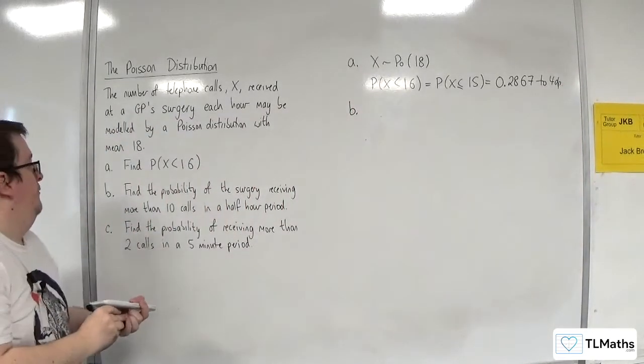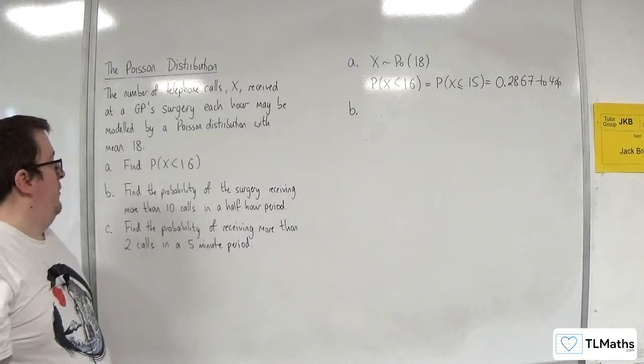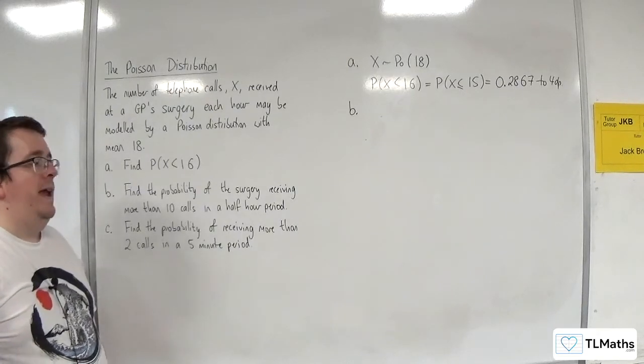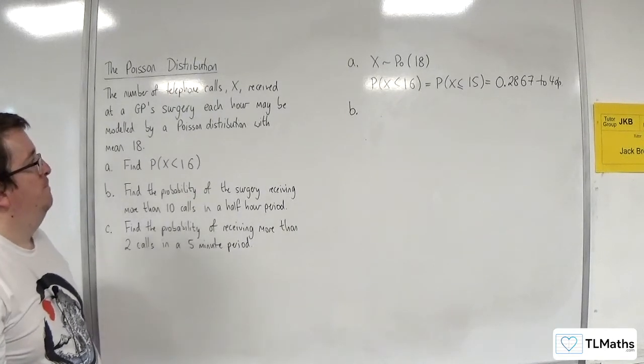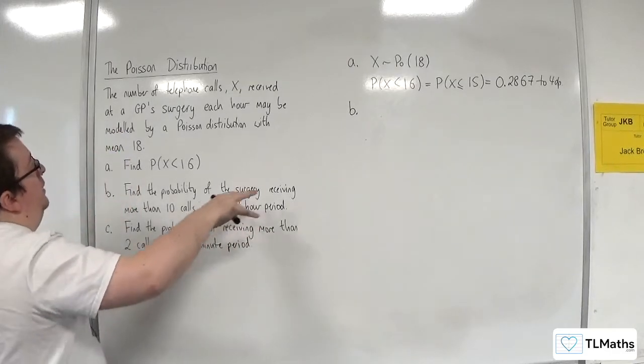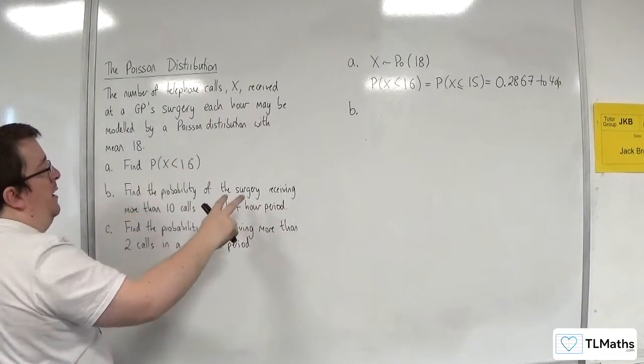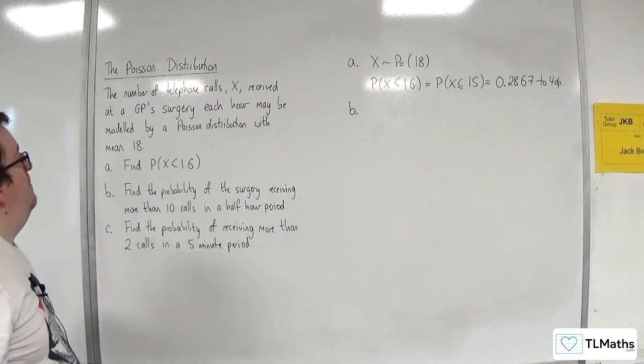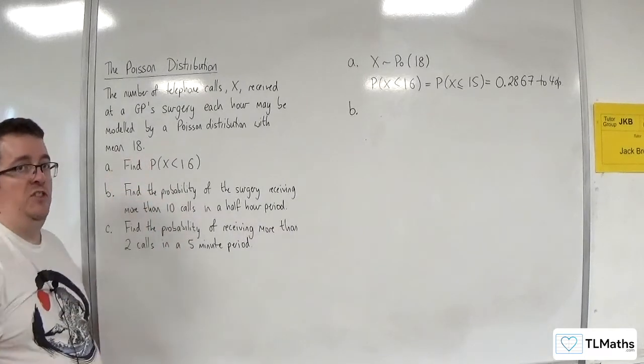Part B. Find the probability of the surgery receiving more than 10 calls in a half hour period. OK, now the time frame has changed. So it's gone from an hour down to a half hour. So that means we need to divide the mean by 2.